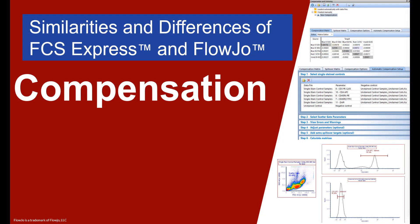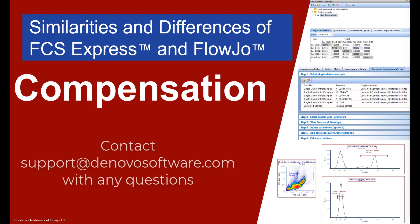As we saw, FlowJo and FCS Express share many similarities when it comes to compensation. You will need good controls for negative and single-stained samples. A wizard is used to perform compensation. Compensations are saved as a separate file and then applied to your data for final analysis.